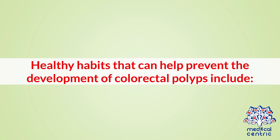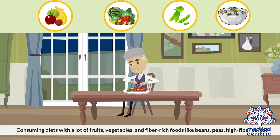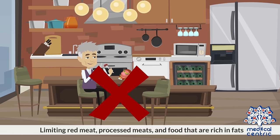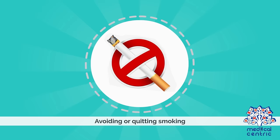Healthy habits that can help prevent the development of colorectal polyps include consuming diets with a lot of fruits, vegetables, and fiber-rich foods like beans, peas, and high-fiber cereal; keeping a normal body weight; limiting red meat, processed meats, and foods that are rich in fats; and avoiding or quitting smoking.